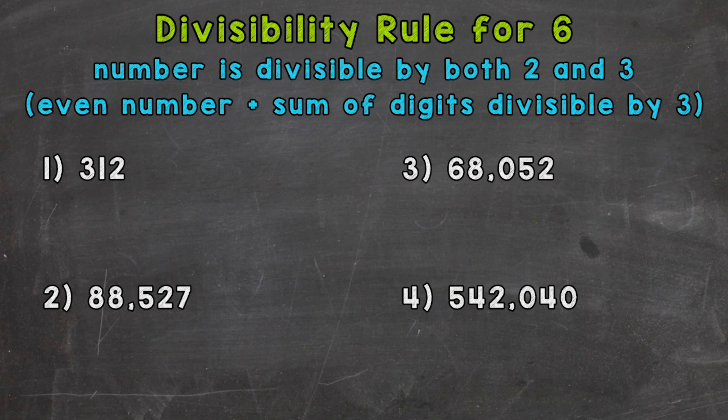Remember, when we're checking for divisibility, we're checking to see if we can divide without getting a remainder so the given numbers work out exactly. We have four numbers that we're going to see if they are divisible by 6 based on the rule at the top of the screen.